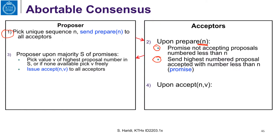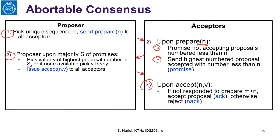Once you get a majority of promises, you pick the highest proposal number — and if none is available, you pick freely — and then you issue an accept. You send the accept to the acceptors. This is the only place where the acceptor is required to send a rejection: if the acceptor has responded with a higher promise m, it sends a rejection; otherwise it sends an accept. This is the only necessary rejection.